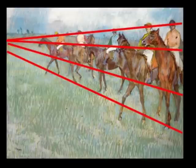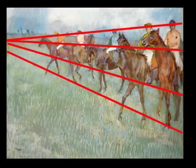Other lines can be created by connecting other points in the composition. As these implied lines illustrate, Degas leads our eyes from the right edge of the composition to the specific point of the top left corner.